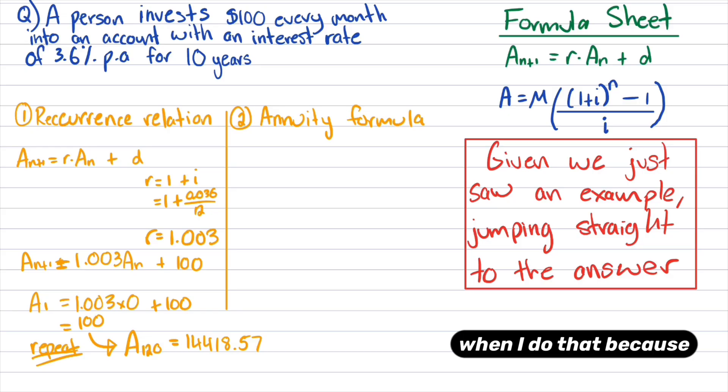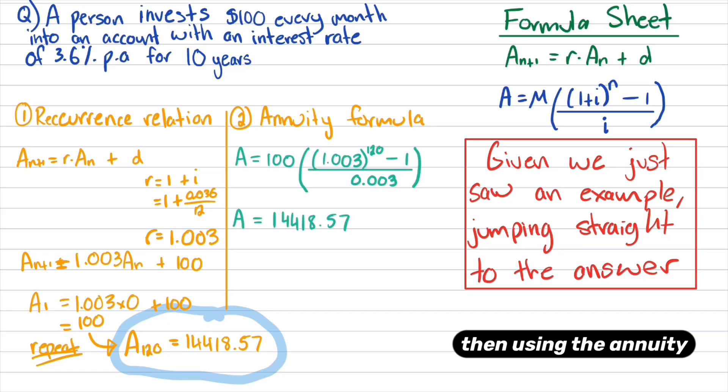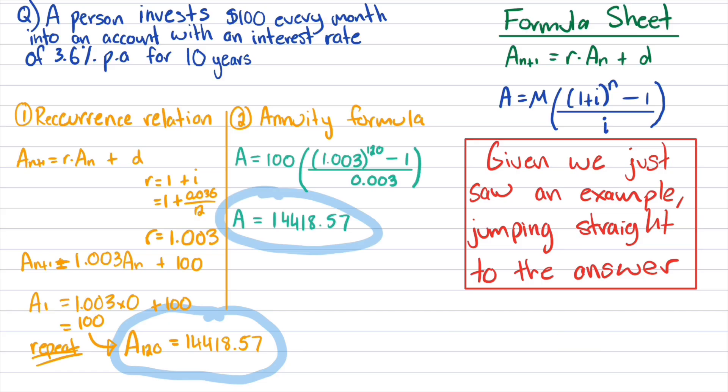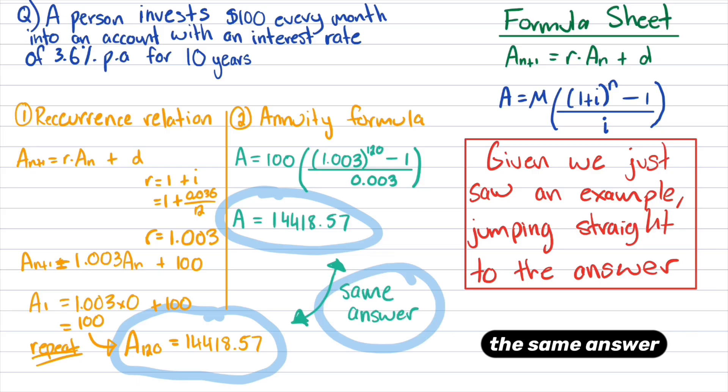So when I do that, because it's 10 years, compounding monthly, that's 120 terms that I need to find. So once I hit the equals button on my calculator 120 times, that's the value I get. Then using the annuity formula, I do the same thing. I plug everything in, and as we'd expect, I get the same answer.